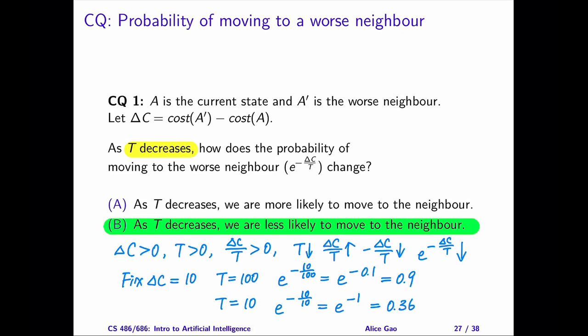Therefore, the probability decreases since the exponential function is increasing. You can also solve this by trying some numbers. Let's fix delta C to be 10. If T decreases from 100 to 10, then the probability also decreases from 0.9 to 0.36.